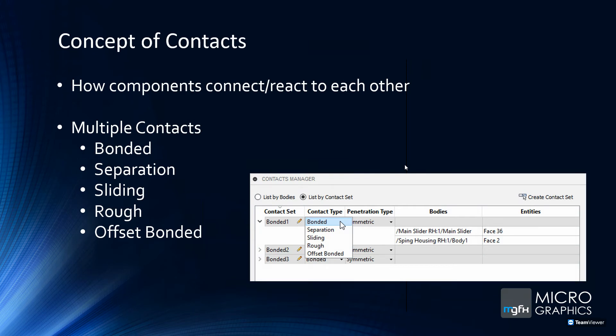Contacts define how components connect or react to each other — important when designing assemblies. The types of contacts include bonded, separation, sliding, rough, and offset bonded contact. You can see in the contacts manager on the right-hand side that you can change to different contact types as needed.